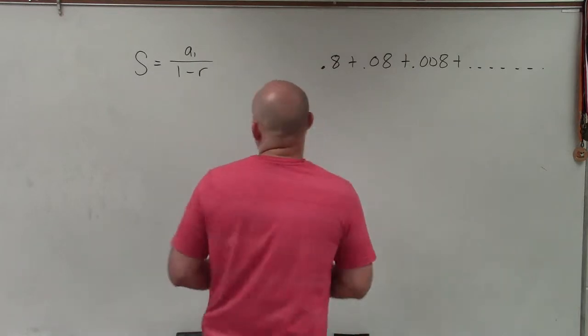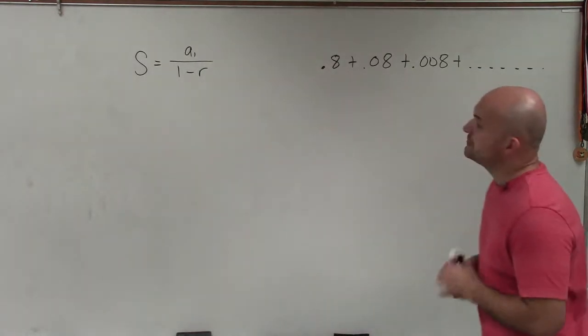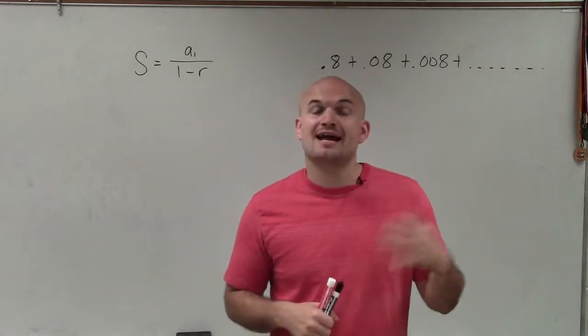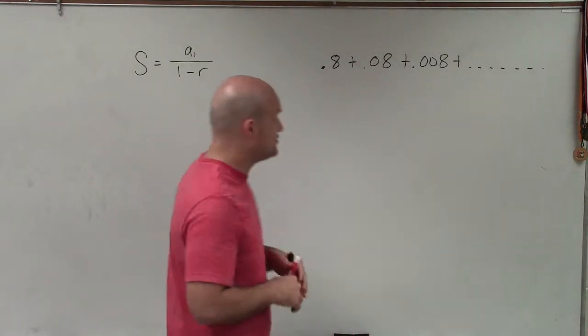We have the formula to find the sum of a geometric sequence, which is S equals a₁ divided by 1 minus r, where a₁ is your first term in your sequence, and r represents your ratio between your terms.